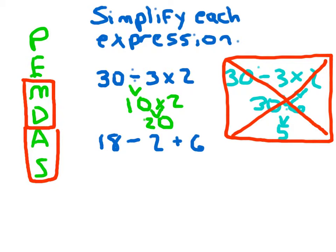Looking at our next expression, we've got 18 minus 2 plus 6. Again, we're showing the importance of doing addition and subtraction from left to right. The first addition or subtraction problem we come across from left to right is 18 minus 2. 18 minus 2 is 16, plus 6, which is 22.